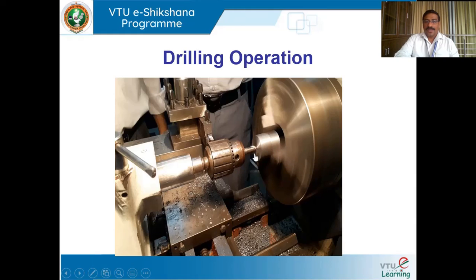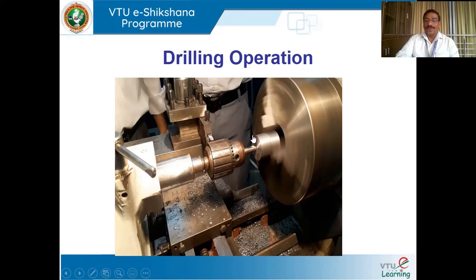The workpiece is held in the chuck and the cutting tool, that is the multi-point cutting tool, is fed against the rotating workpiece. In an actual drilling machine the workpiece is held stationary and the rotating drill bit is advanced inside the workpiece. But on a lathe the workpiece is rotating in the chuck and the drill bit is not rotating — it is only moving in a linear direction and is pierced inside the workpiece to make a desired diameter hole.